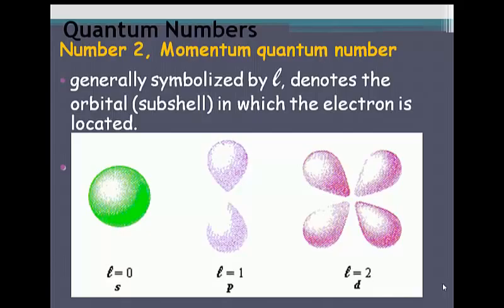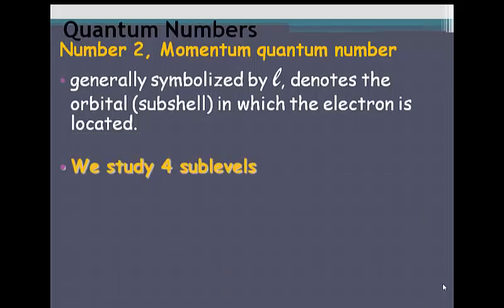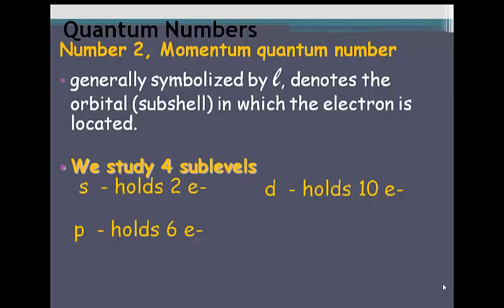The second quantum number is also known as the momentum quantum number. In general, this is usually symbolized by a letter L. That designates the orbital or the subshell in which the electron is located. We study 4 sublevels. The first one is an S sublevel. This always holds a maximum of 2 electrons. There's also a P sublevel, which holds a total of 6 electrons. A D sublevel that holds 10 electrons, and an F sublevel that holds 14 electrons.